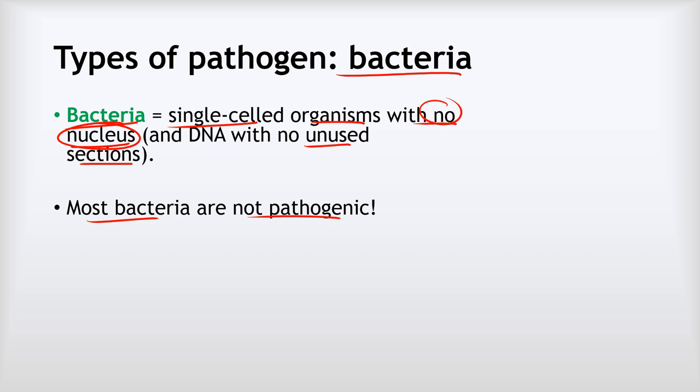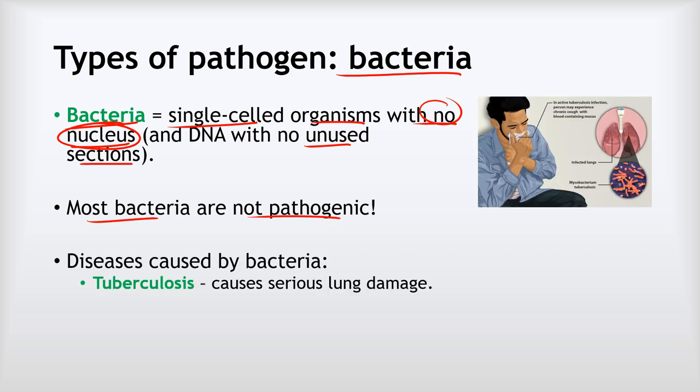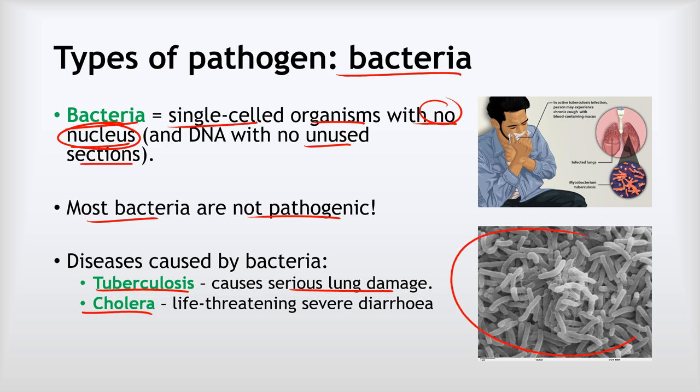However, sometimes some bacteria can make us ill. There are three specific examples on the Edexcel syllabus. The first is tuberculosis, which causes very serious lung damage. We're lucky in the UK that it's very rare, but tuberculosis kills around 1.2 million people every year worldwide. The next bacterial disease is cholera, which causes life-threateningly severe diarrhoea. Essentially, you die from dehydration because fluid runs straight through — this is particularly dangerous for young children and babies, who can die within a very small number of days.